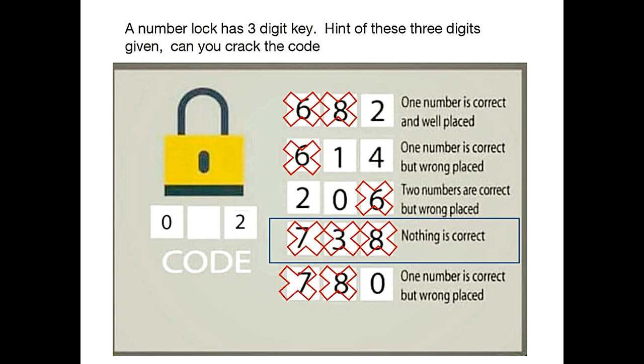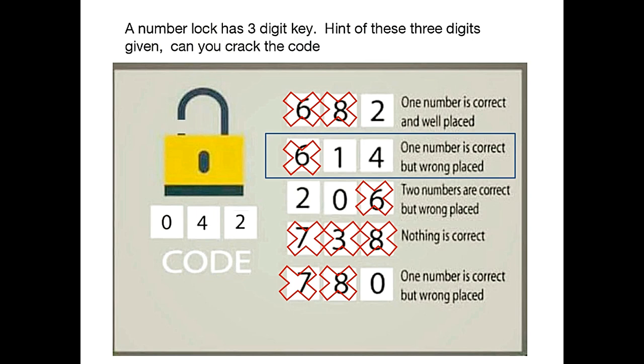Now let's move back to the second condition. Second condition says one number is correct but wrongly placed. 1 cannot be the answer because it's already in the middle, so 4 has to be our answer. Hooray! We have unlocked the code.